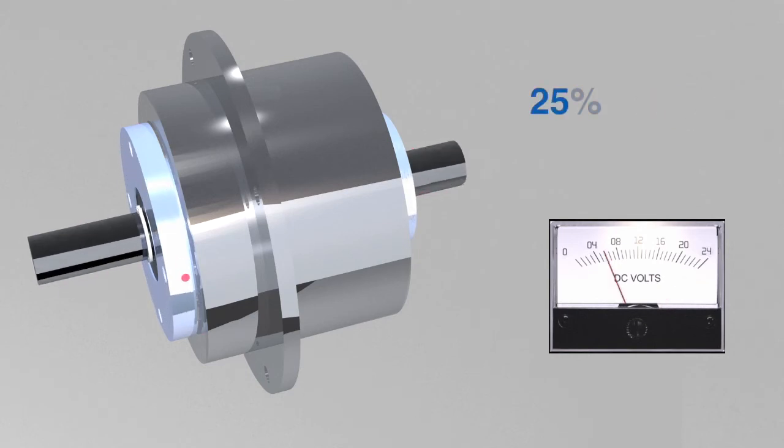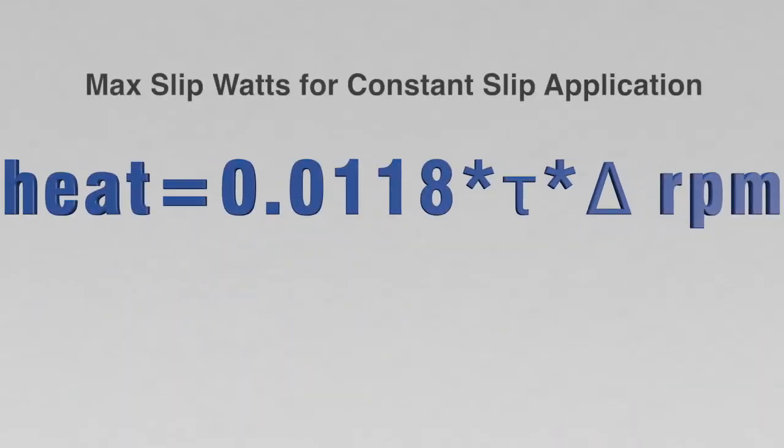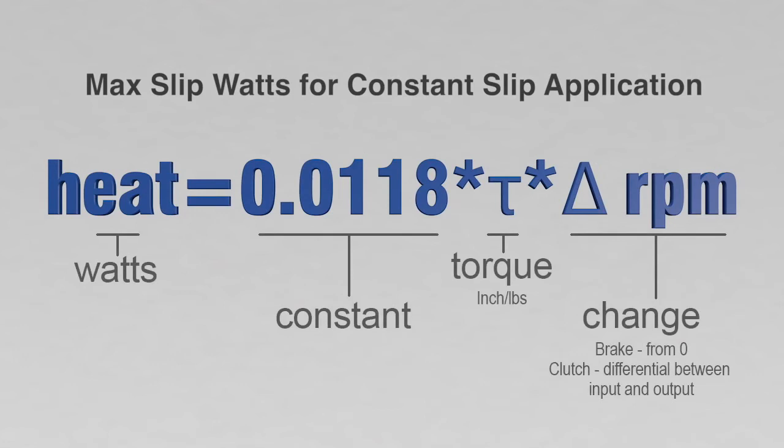This controllability makes magnetic particle clutches and brakes suited for tension control applications. Since magnetic particle applications involve partial or constant slip, they are usually not sized based on torque, but rather heat dissipation, according to the following formula.